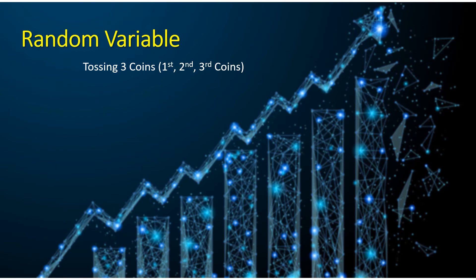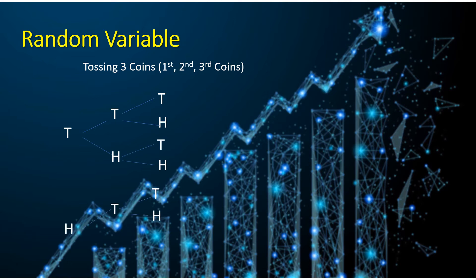This time, let us now consider that we're going to toss 3 coins, and we're going to assign these 3 coins as the first, second, and third coins. So, let us first identify the possible outcomes. Let's say our first coin will appear as a tail, the second coin appears as a tail as well, and then the third coin will also result into a tail. So this is our first possible outcome wherein the combinations are tail, tail, and tail. The second possible outcome would be tail, tail, and head.